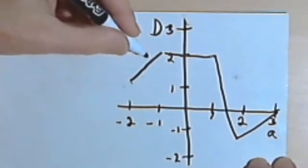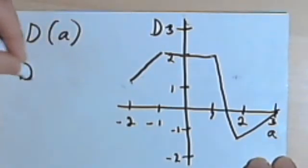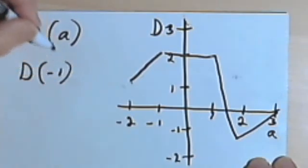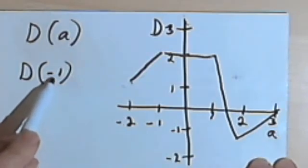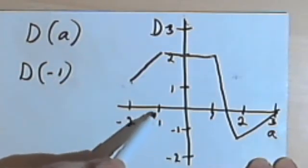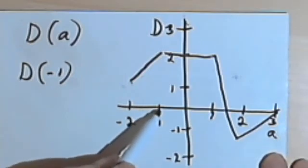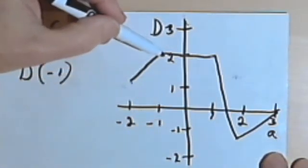And then if I'm told to use the graph to evaluate, let's say, d of negative 1, all I'm going to do is say, what's the output when the input is negative 1? Well, when the input is negative 1, that's negative 1 on the horizontal axis, I'll go up until I get to the graph.